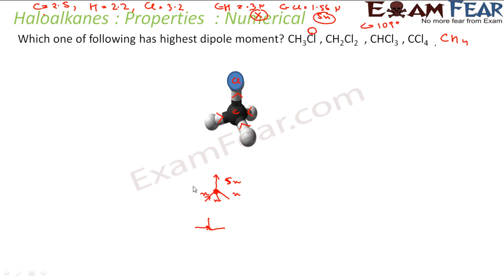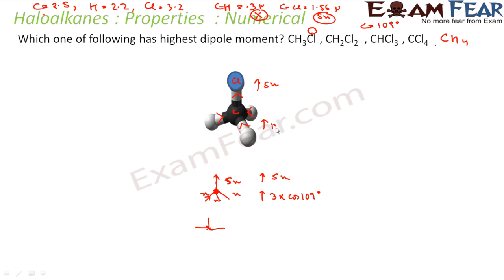The vertical components will add up. Each contributes x·cos(109°), and cos(109°) is about −0.33, so three hydrogens contribute 3x·cos(109°) ≈ 1x in the downward direction. The chlorine contributes 5x upward. So the net dipole is 5x + (−1x) — wait, actually the three hydrogen vertical components sum to about 1x pointing in the same direction as the Cl, giving a total of 6x.